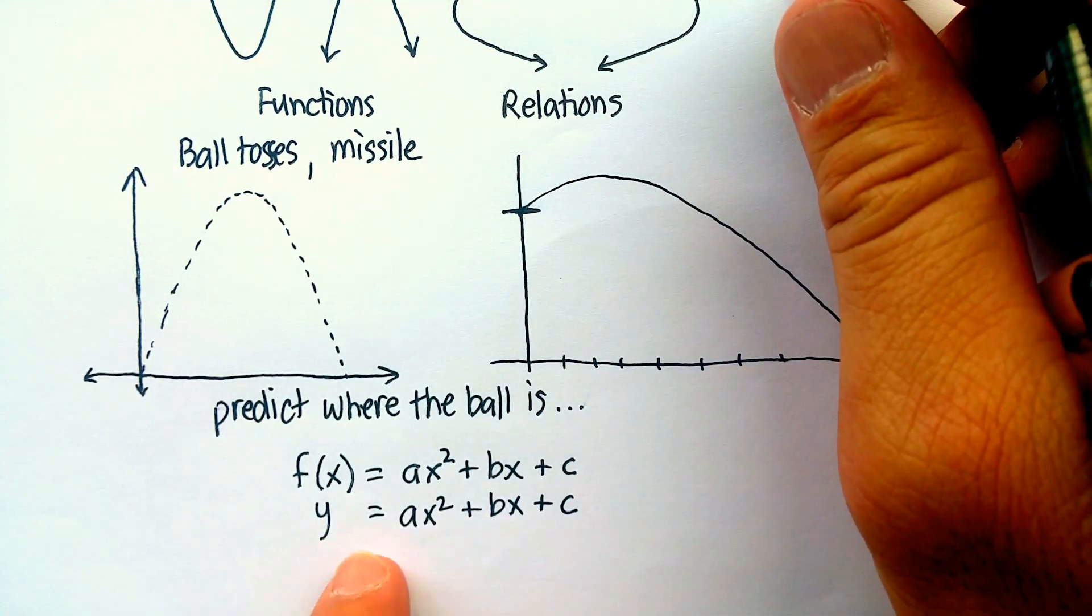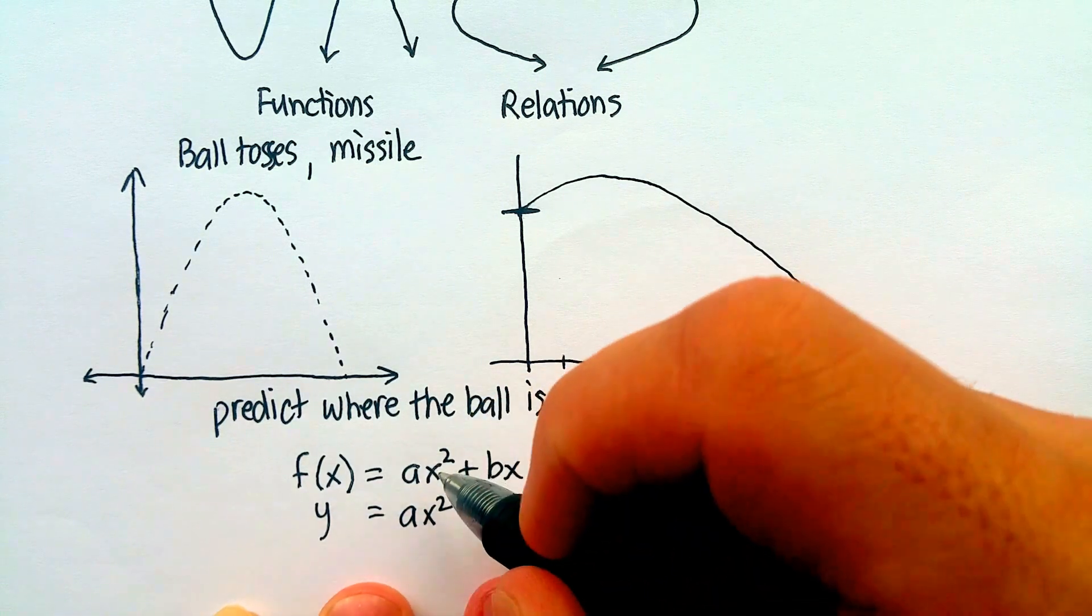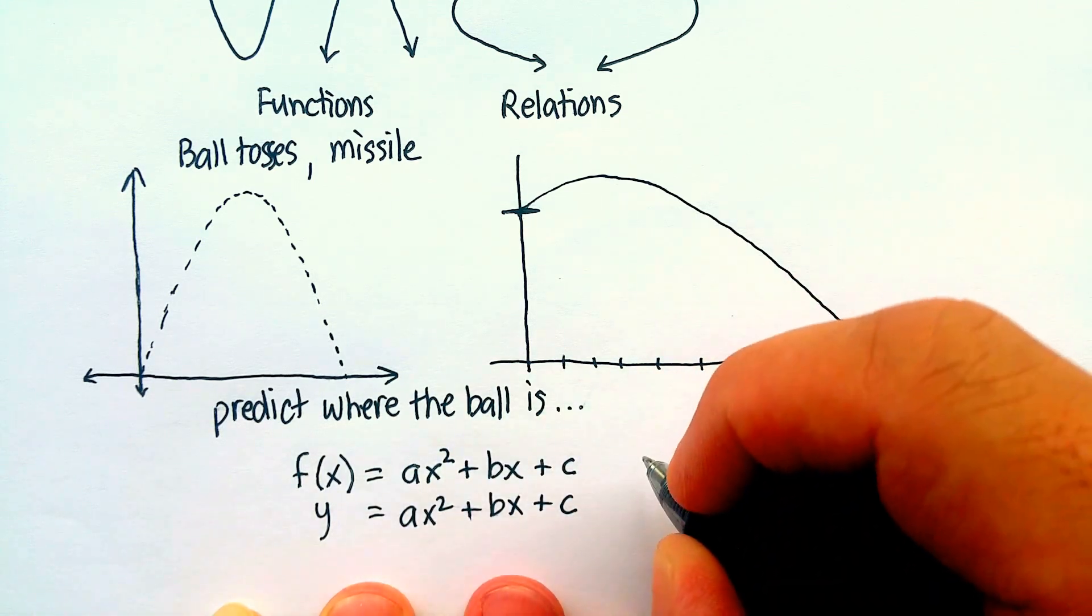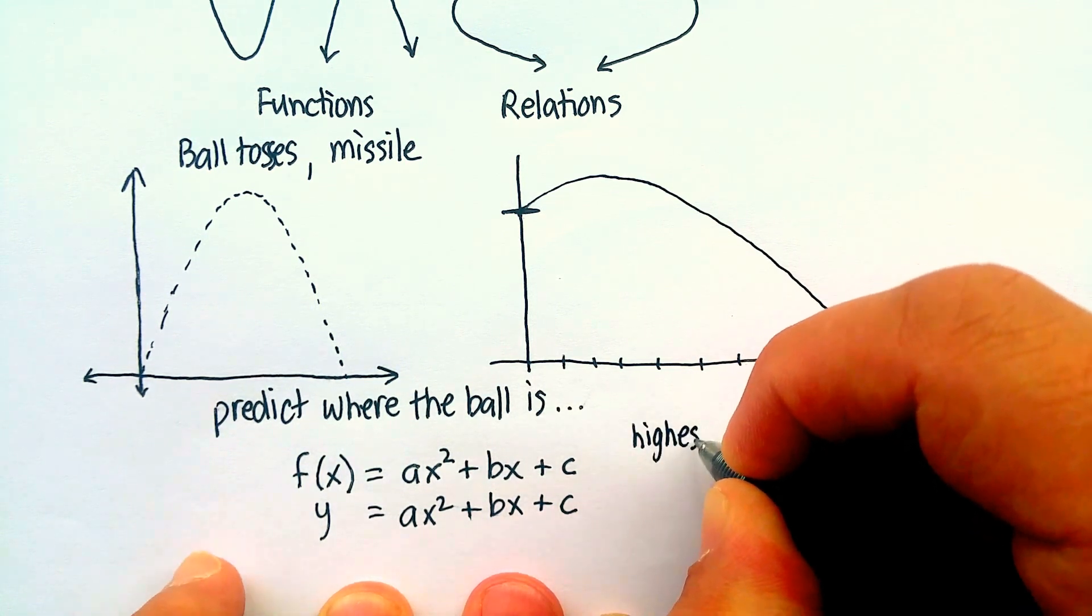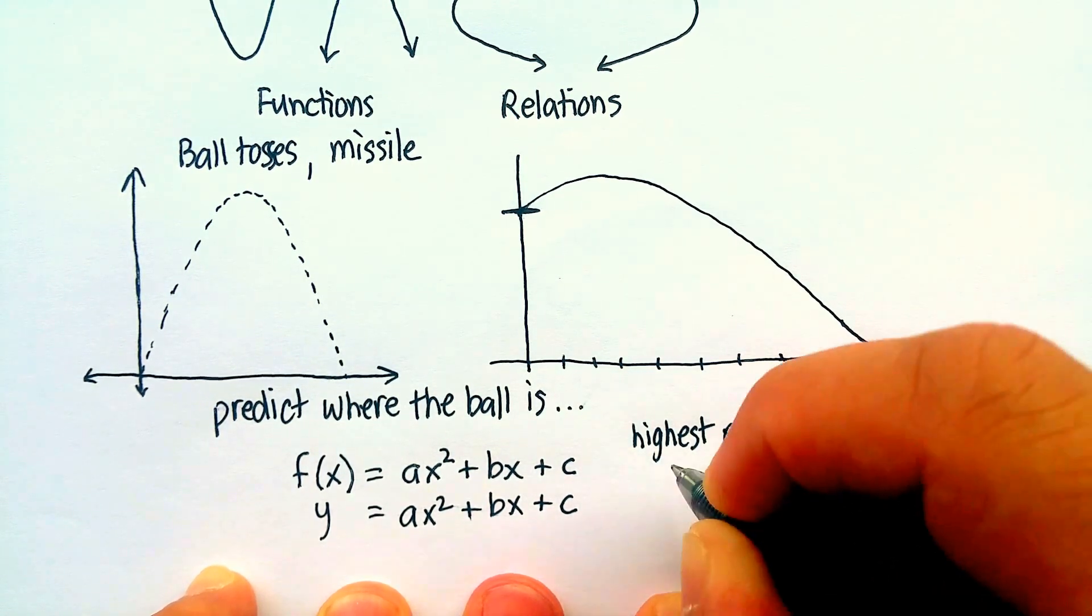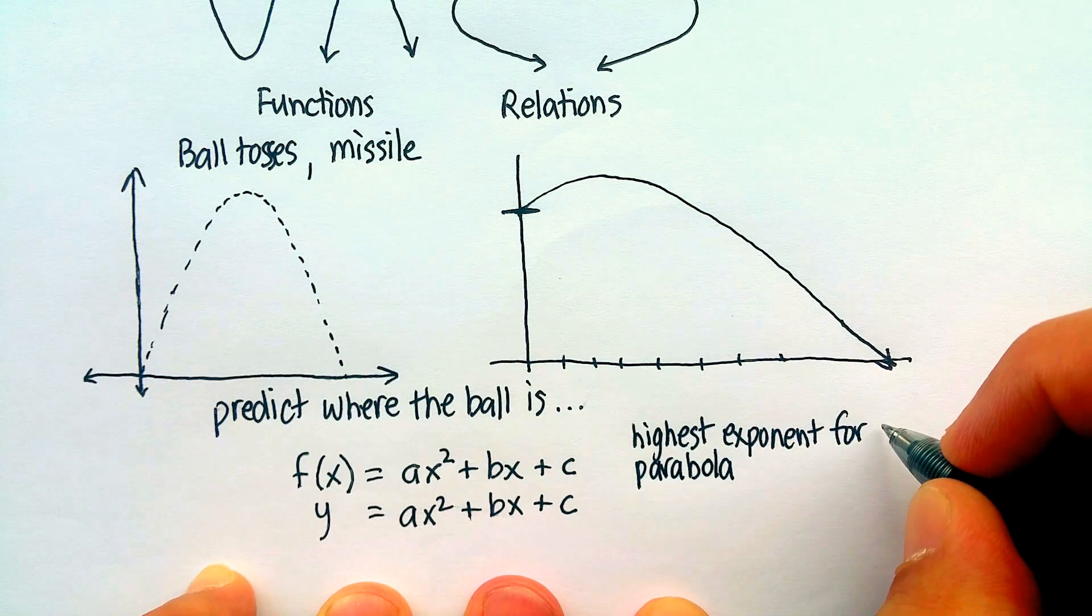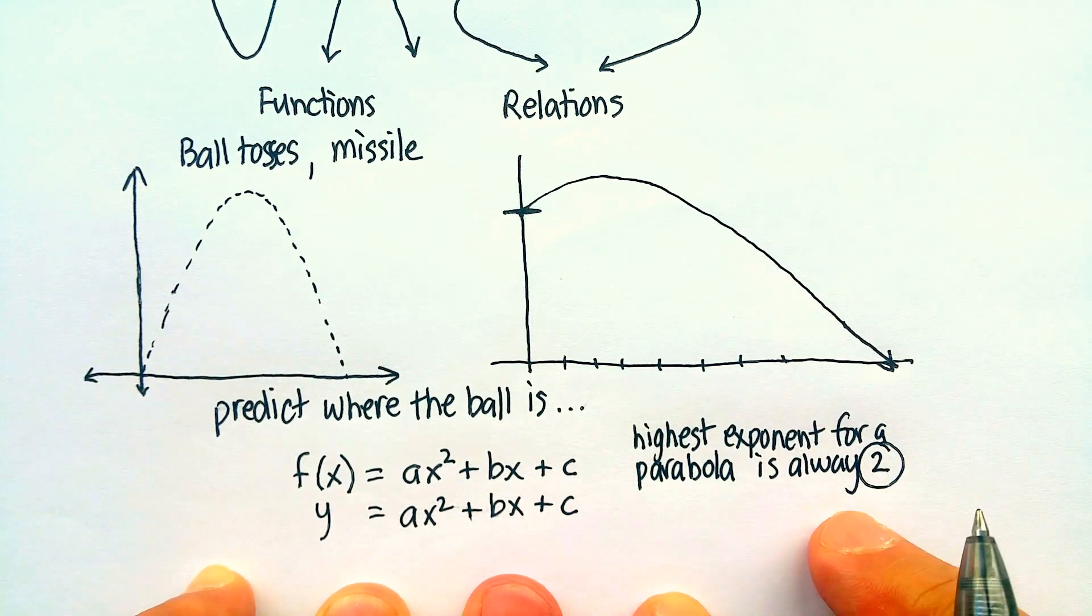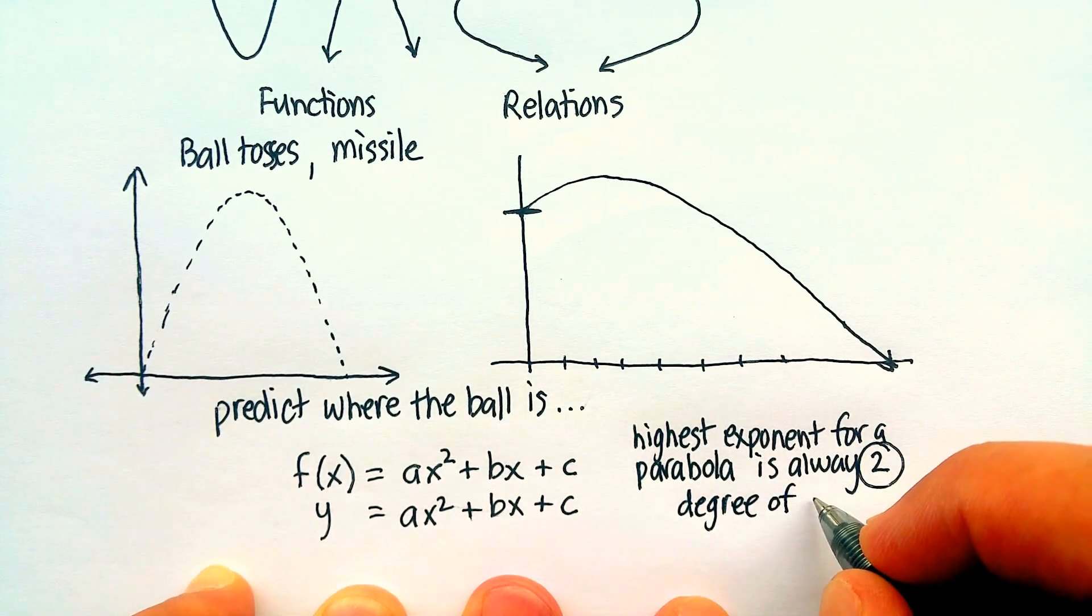What you'll notice about this particular equation is that the highest exponent here is a 2. So all equations, all functions that have the highest exponent of 2 is called a quadratic. So the highest, or the largest really, exponent for parabolas or quadratics is always 2. That is also known as the degree of a quadratic.